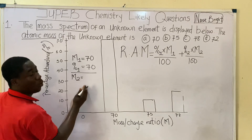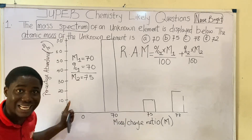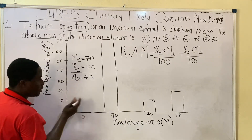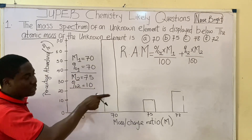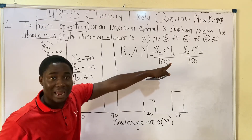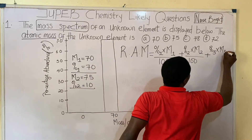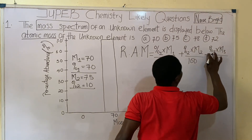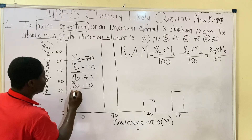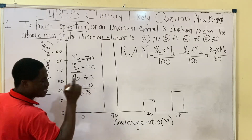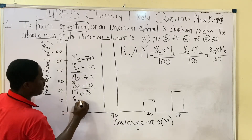Moving to the second isotope: M2 — the mass number of the second isotope — is 75, and it relates to the 10 mark on the y-axis, so percentage 2 equals 10. We actually have three isotopes here, so we extend the formula: plus (percentage 3 × mass number 3) / 100. M3 is 78, relating to 20, so percentage 3 equals 20.